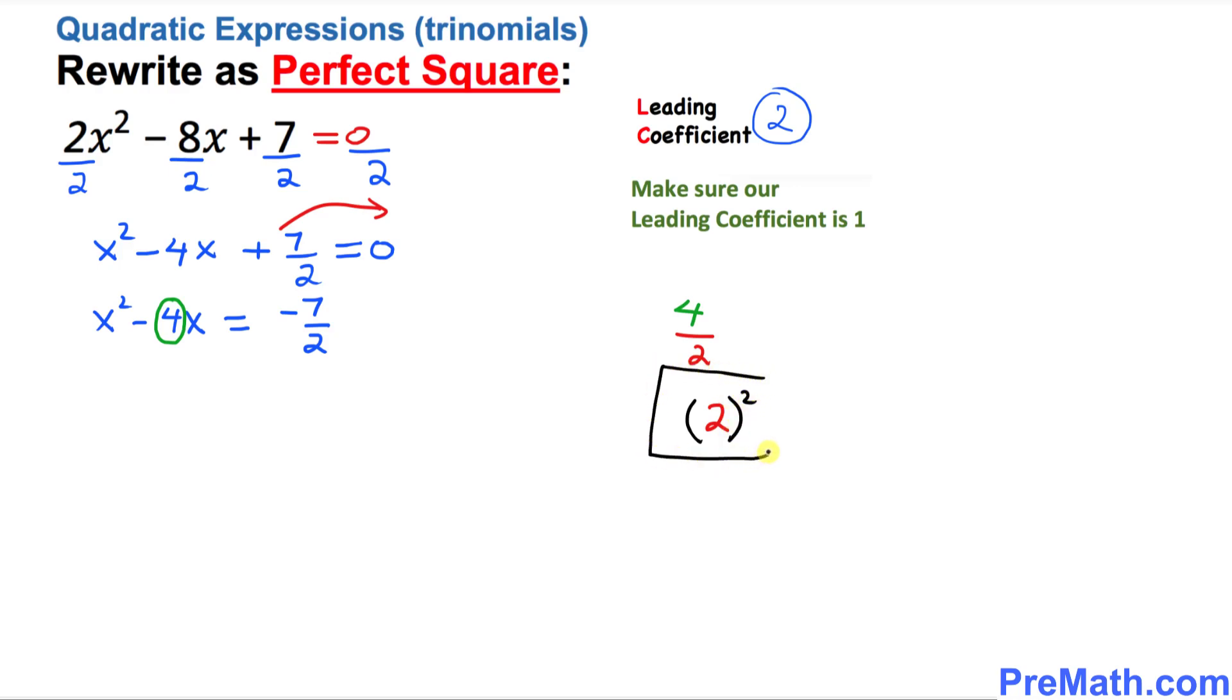So this number, whatever we got, we are going to add on both sides of this equation. So let's go ahead and do this thing. x² - 4x + = -7/2 +. Now I'm going to add this 2² on this side, 2² on this side.